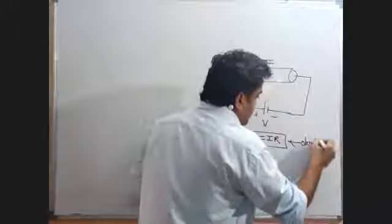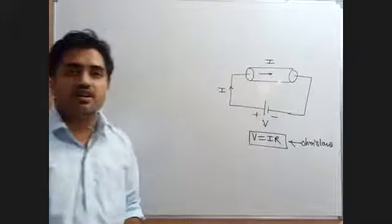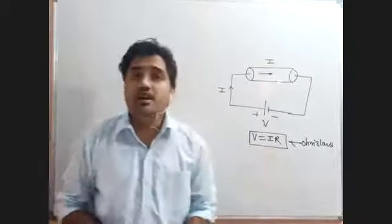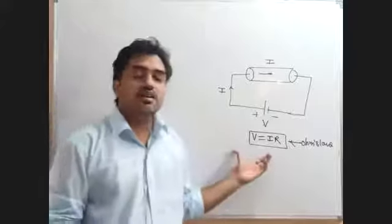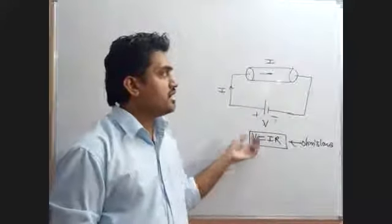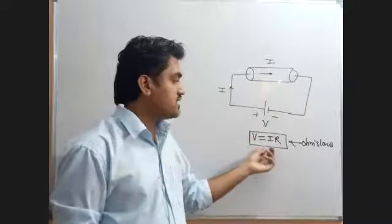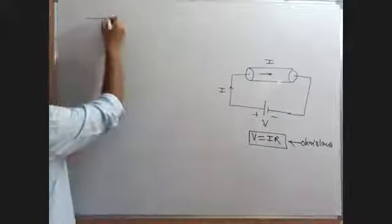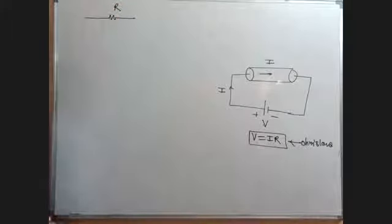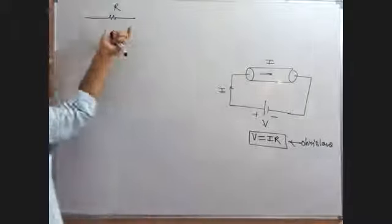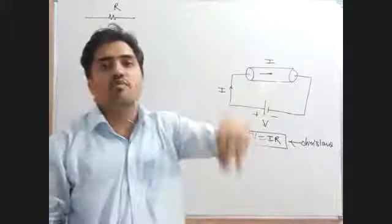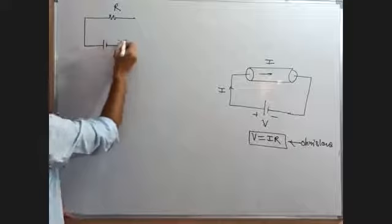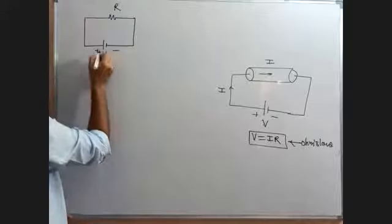Ohm's law states that the current flowing in any conductor is directly proportional to the potential difference applied across it. So V equals IR, at constant temperature and constant dimensions — when all other physical parameters remain constant. This conductor can be represented by a resistor R, because it has the property of resistance. If we apply V volts across it, then V equals IR.